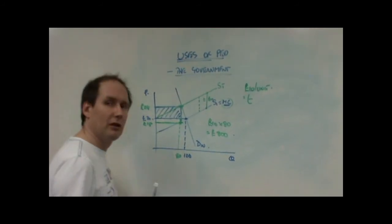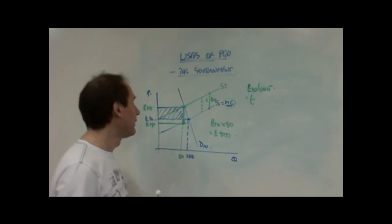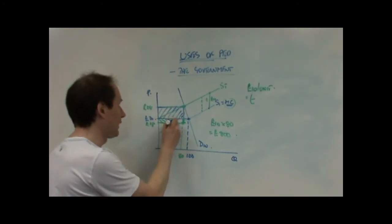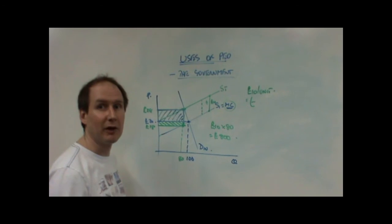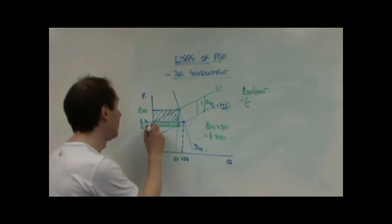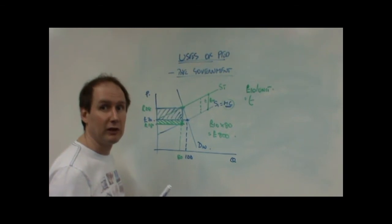The producer isn't coming off so badly in this case. Because demand hasn't fallen that far. And it's only paying 2 pounds of the tax. That proportion of the tax is the bit that's paid by the producer. Because from their point of view, they used to receive 20 pounds. And now, they only receive 18 pounds.